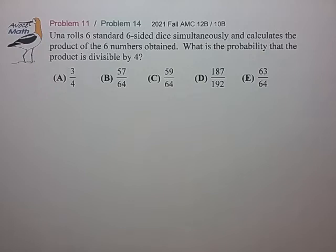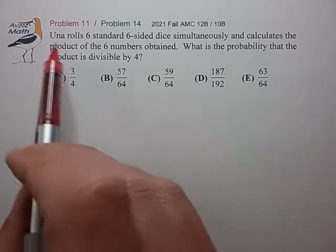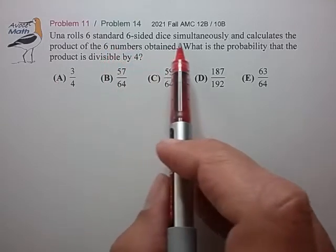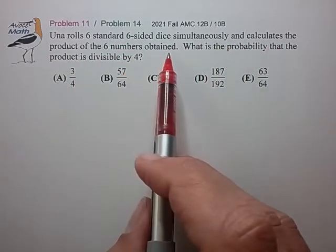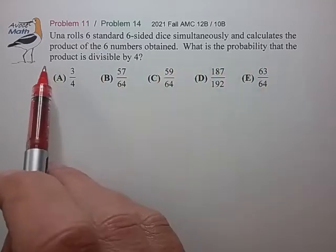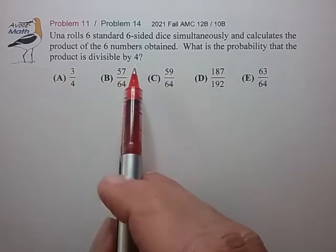Hi, this is problem 11 from the 2021 AMC 12B. Una rolls six standard six-sided dice simultaneously and calculates the product of the six numbers obtained. What is the probability that the product is divisible by 4?